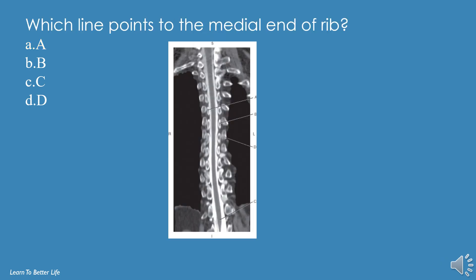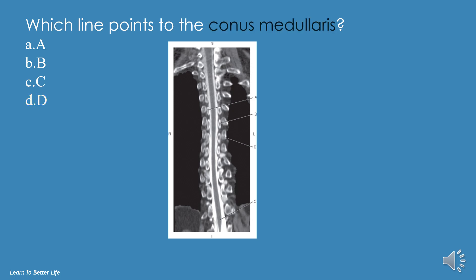Which line points to the medial end of the rib? A, B, C, or D? The answer is D. Which line points to the conus medullaris? A, B, C, or D? The answer is C.